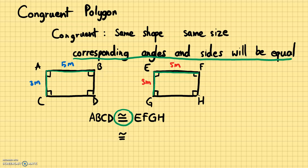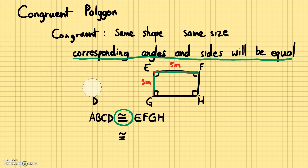So for our EFGH rectangle, this side will also be 3 meters and this side will also be 5 meters. That's what we mean by congruent — they have the same shape, they're both rectangles, and the corresponding sides have the same size. And this is true for other shapes besides rectangles, so let's try with a triangle.